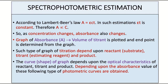The reactant or substrate is the solution whose concentration is to be determined. The titrant or estimating reagent is the solution of known concentration, and the product is obtained by the reaction between these two. The shape of the graph obtained depends upon the optical characteristics of the reactant, titrant, and product, giving rise to different types of photometric curves.